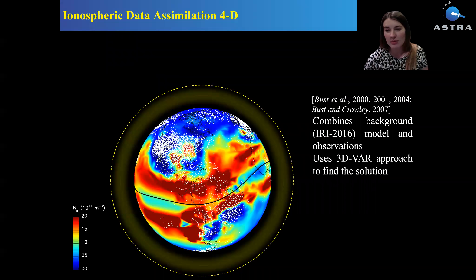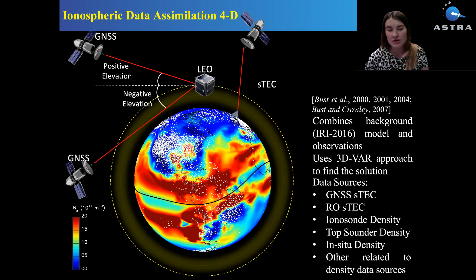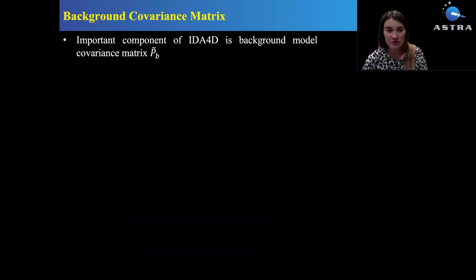IDA4D combines background IRI-2016 model and observations using 3D-VAR approach to find the solution. The observations that can be used are GNSS total electron content, radio occultation data and point measurements from ionosondes and coherent scatter radars, top sounders and in-situ density measurements, plus other not directly related to density measurements such as foF2 or virtual heights from the ionosondes.